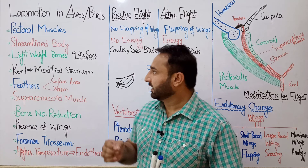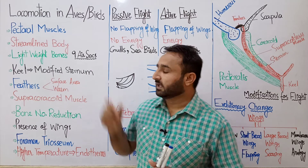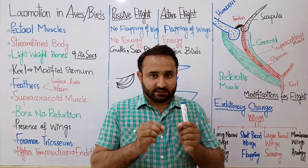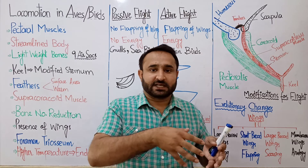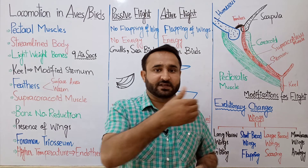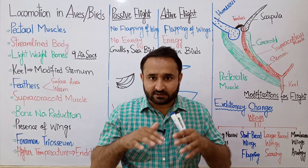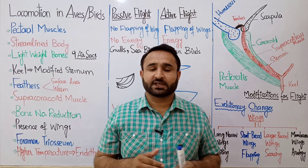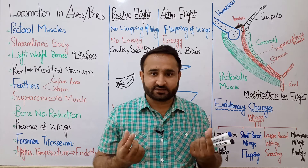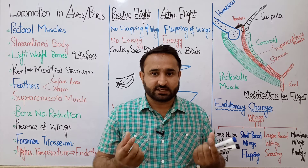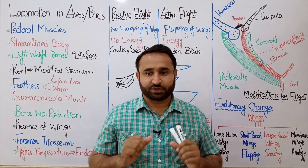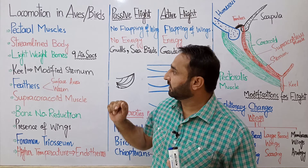One adaptation is highly grown pectoral muscles. The other is their streamlined body — better streamlined than amphibians as well as reptiles. Streamlined means the ends are tapered and thin, and the central surface is broader. This is an adaptation.